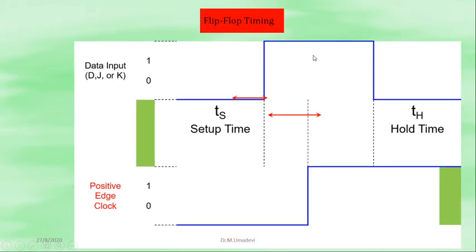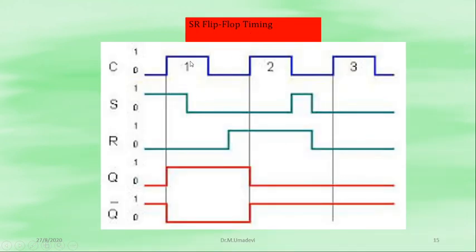This is flip-flop timing. As shown in the earlier slide, this is the high state and this is the lower state. This time Ts is called setup time and Th is called hold time. This diagram is for a positive edge clock. This is the SR flip-flop timing diagram with clock pulses 1, 2, 3 and various inputs. When S is high (1) and low (0), and similarly for R, the outputs Q and Q-bar are shown.